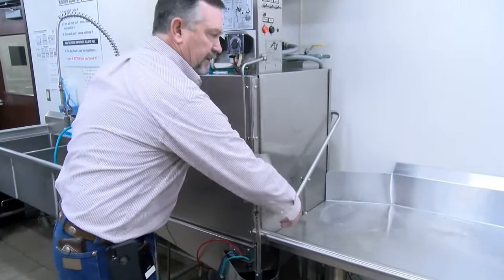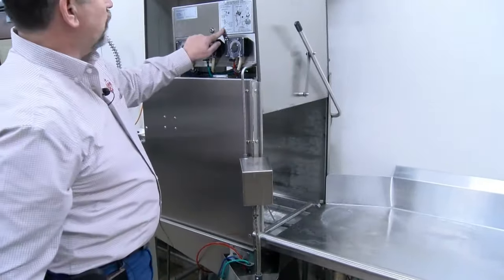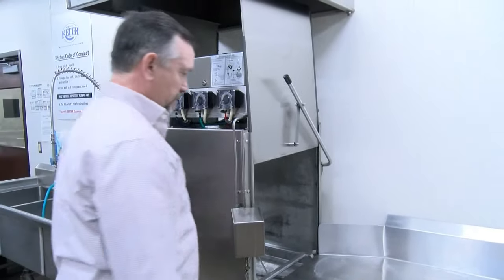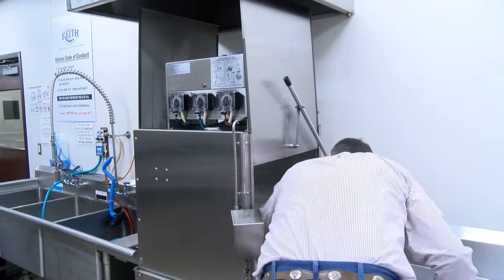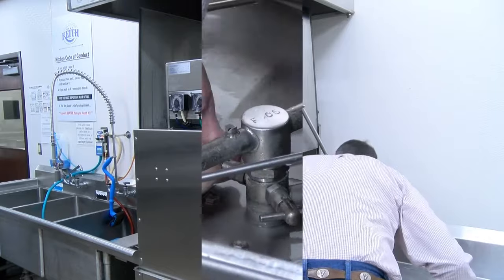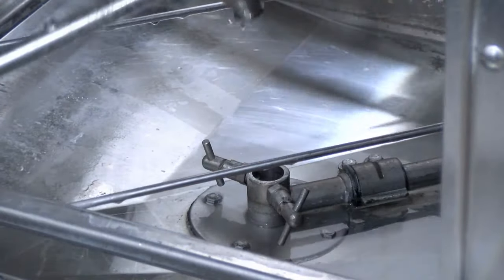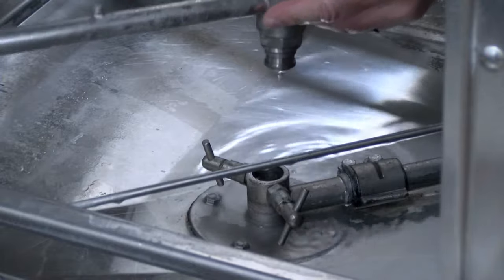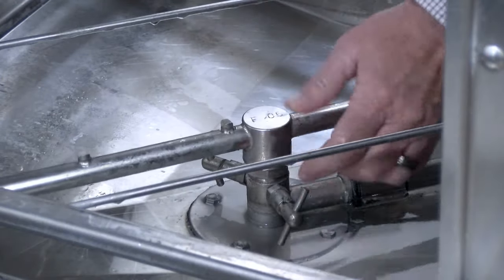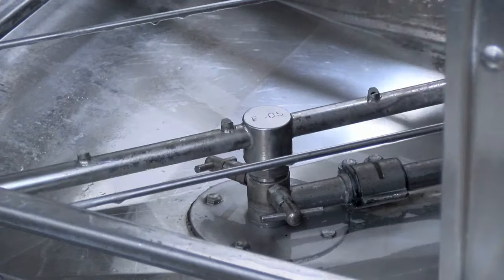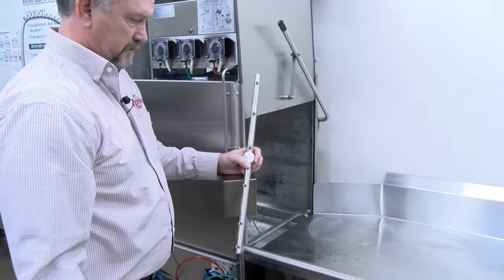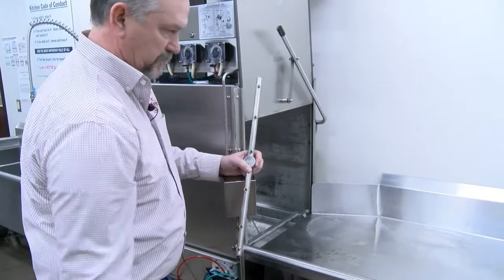The next thing we're going to check are the wash arms. Quarter turn, quarter turn, pull out. The same on the top wash arm. Check all wash jets. Lock wash arms. They have pins.